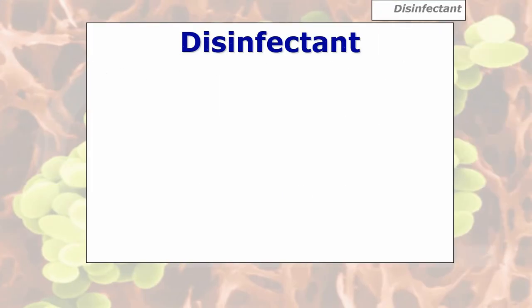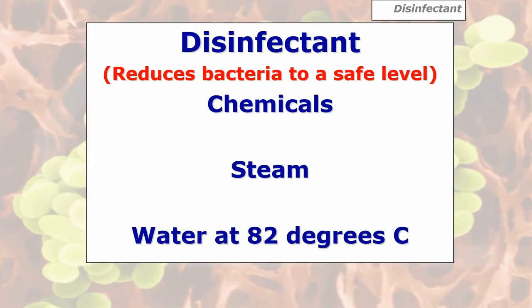So we will use a disinfectant. A disinfectant reduces bacteria to a safe level. It doesn't kill all bacteria at 100% — like the old adage on the bleach adverts on telly, 'kills 99.9%' — because some will unfortunately survive, but not very many.